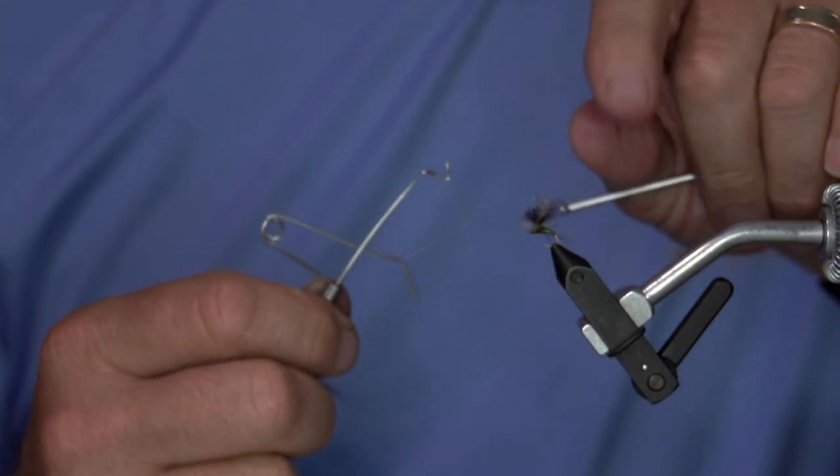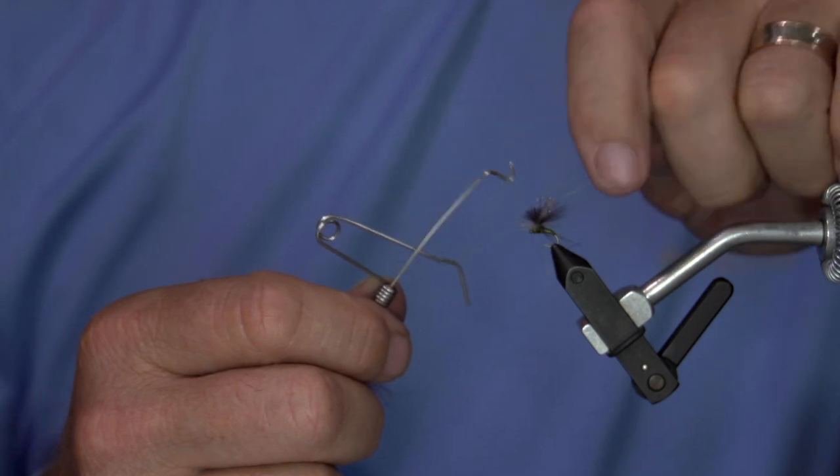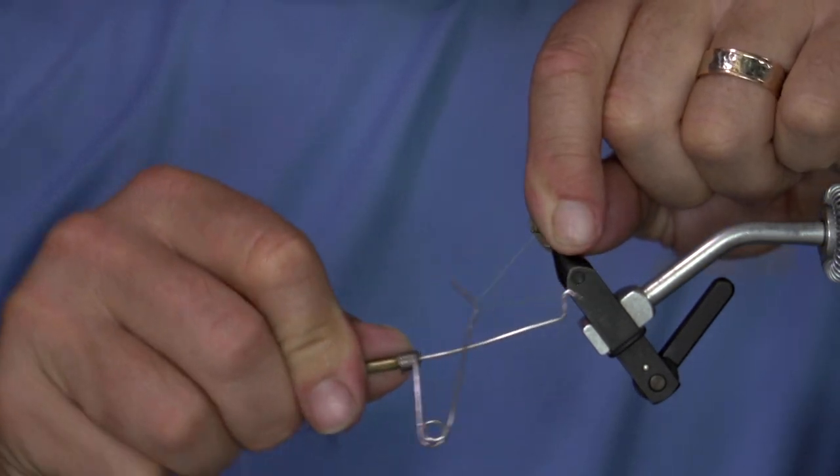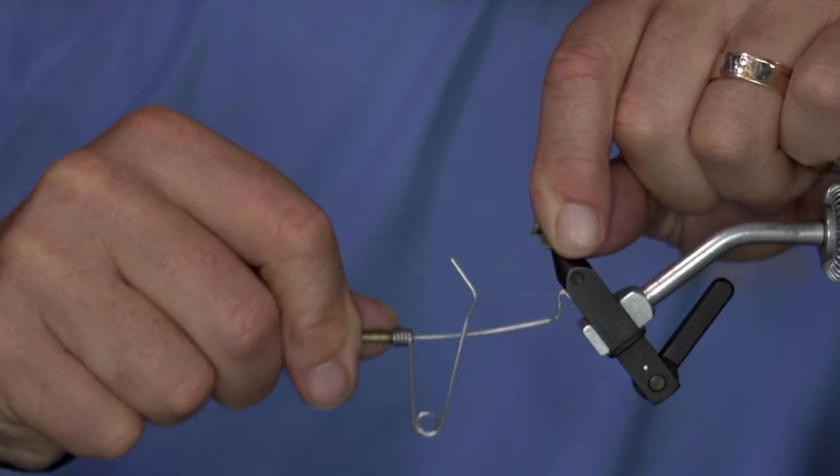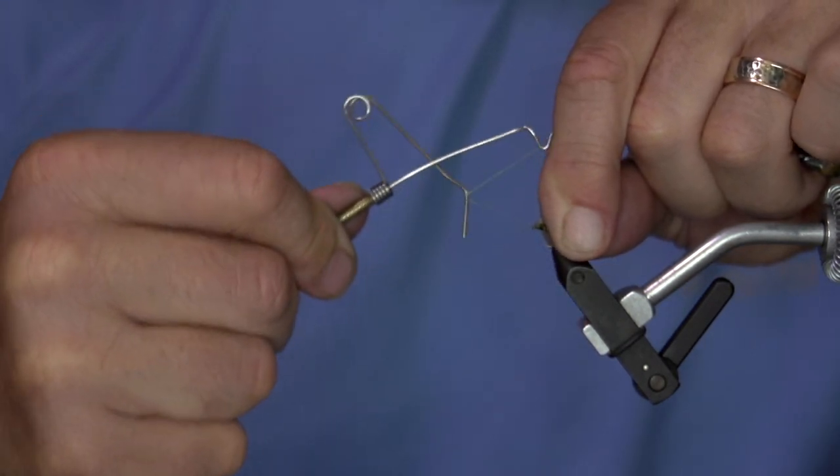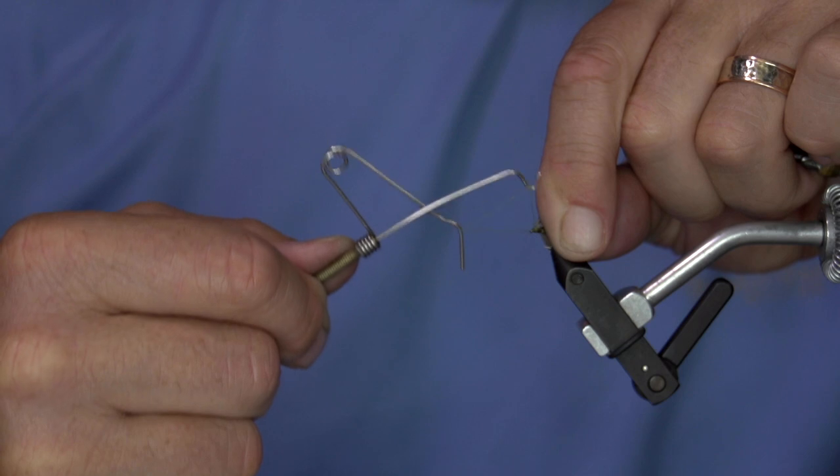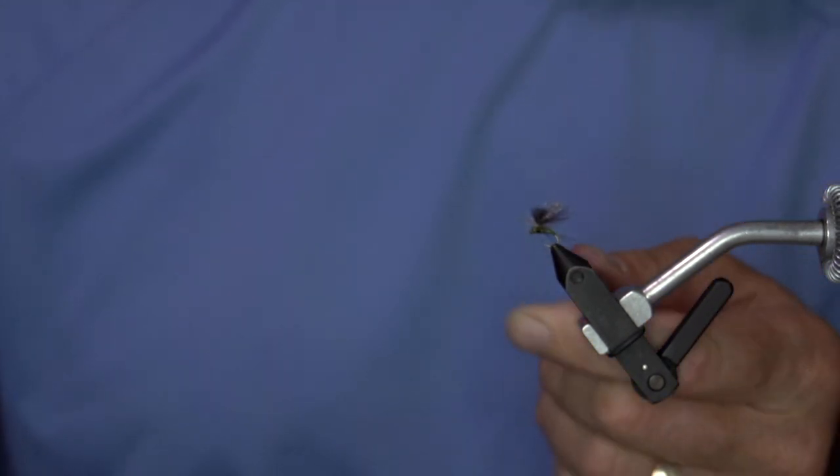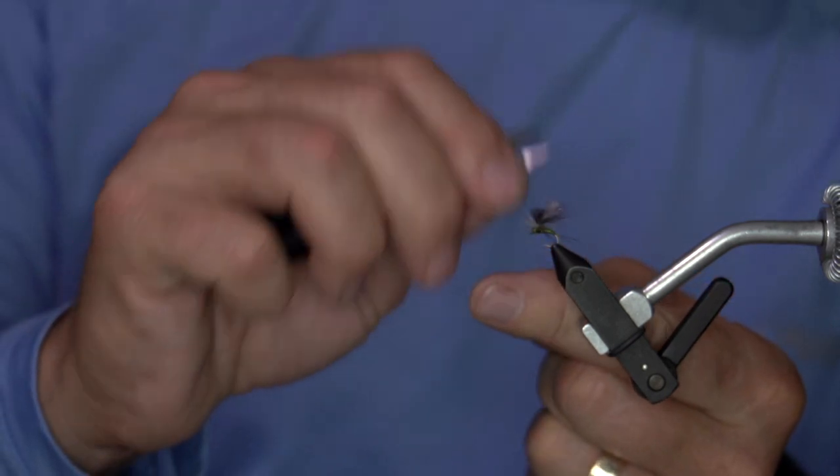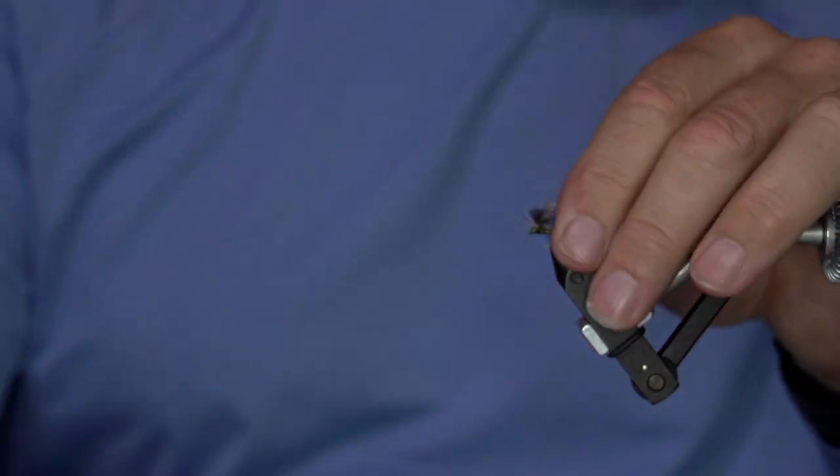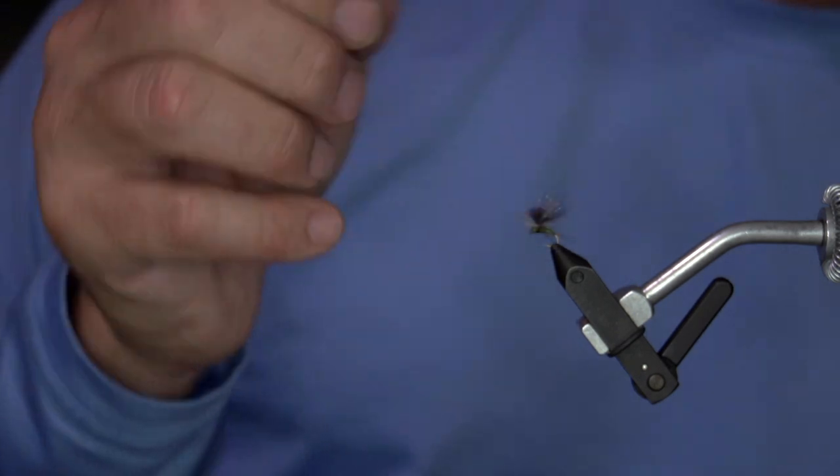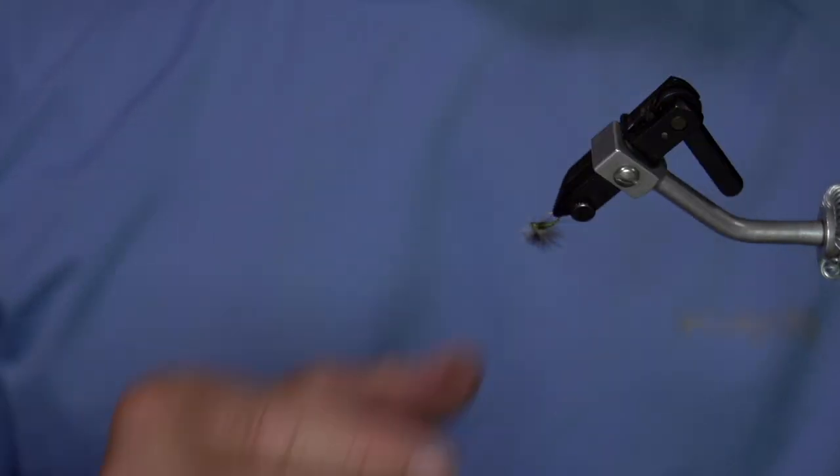Next, you just whip finish this. Pull everything back. And trim it off. Those EP fibers can get a little unruly. So pull some out or trim off whatever it is. Kind of inspect your bug. Look at it.